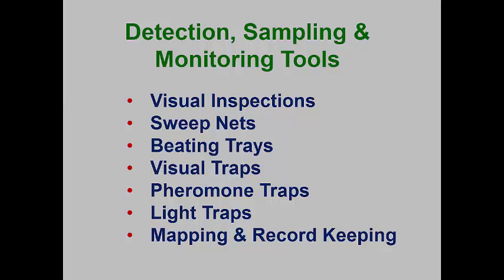There are numerous ways to detect insects and mites that occur in the landscape. Without a doubt, the best tools are your eyes and hands. Look for signs of insect and mite activity, and when it is seen, look closer to see if you can find the culprit. Of course, there are many tools that can make this process easier and more efficient, including many types of sampling tools and traps.